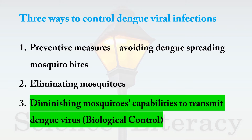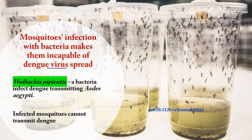The third option is biological control, which we are going to discuss. Through this strategy, dengue-transmitting mosquitoes can live without transmitting the dengue virus. This biological control mechanism involves infecting mosquitoes with a bacterium known as Wolbachia pipientis.